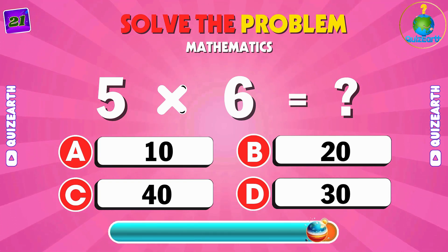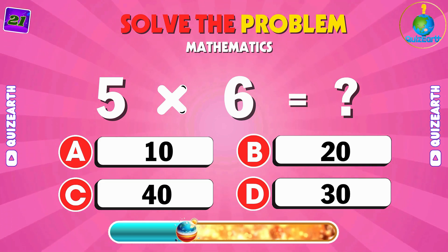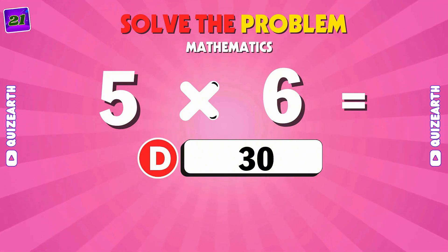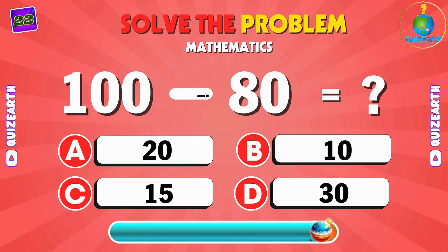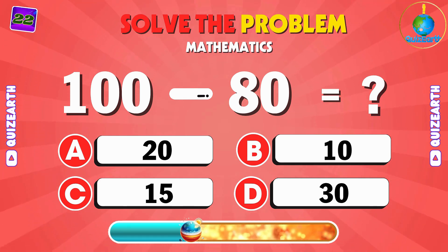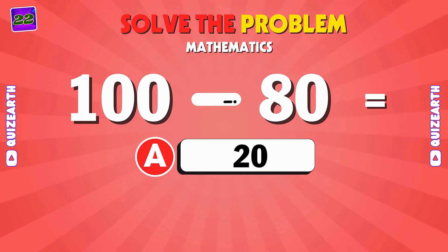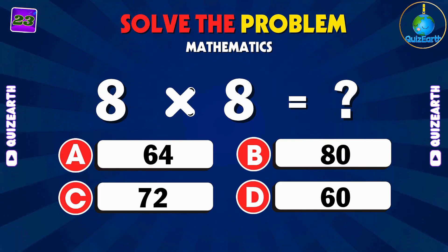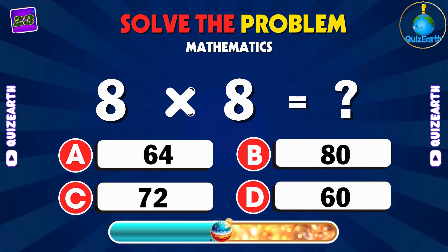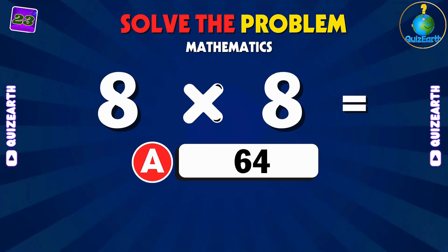Multiply 5 by 6. D: 30. Subtract 80 from 100 — easy one here. A: 20. Here comes a power move — what's 8 times 8? Get ready to multiply and show your math skills. A: 64.